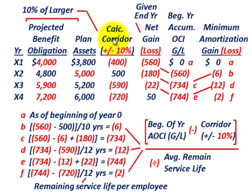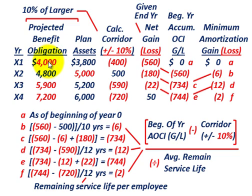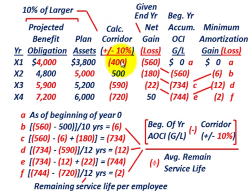To calculate the corridor amount, you look at your projected benefit obligation versus your plan assets, and take 10% of the larger amount between the two. For year X1, the projected benefit obligation is $4,000 (in thousands) compared to plan assets of $3,800 — so the PBO is larger, marked in red. Taking 10% of that gives us our corridor amount for year X1 of $400,000.